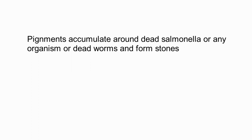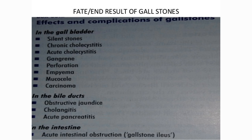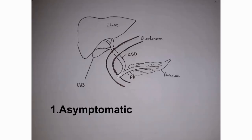There are various stone forms — cholesterol stone, pigment stone, and mixed stone form. The presentation can be asymptomatic, where a patient is found incidentally on abdominal ultrasound. Only that ultrasound reveals the stones. So we have symptomatic and asymptomatic stones. The symptomatic stone is a very important area.